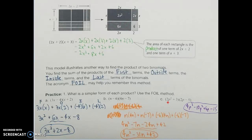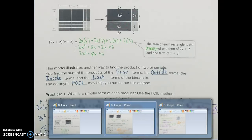For the next example, using the same steps: the first terms 2p squared times 2p give us 4p to the third. Outside terms: 2p squared times negative 5 gives negative 10p squared. Inside terms: 3 times 2p gives 6p. And last terms: 3 times negative 5 gives negative 15. There actually aren't any like terms here because I have all different exponents, so that would be my final answer in simpler form: 4p to the third minus 10p squared plus 6p minus 15.